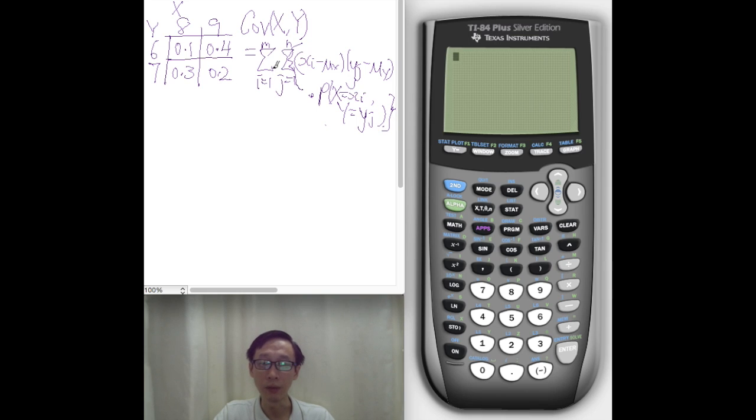But how do we enter this or use the TI calculator? Now, first of all, you need to tabulate all pairs, all unique pairs of X and Y into your calculator. So you don't have to do this working here, but I'm just tabulating it for the sake of clarity.